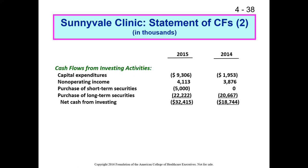First, we spent some money buying new capital. When we use the phrase 'capital,' we're referring to some sort of long-lived asset — an additional building, vehicle, or equipment. Sunnyvale increased its property and equipment by $9.3 million this year. When we buy property and equipment, the sellers expect us to pay in cash, so when capital expenditures go up, our cash balances go down.